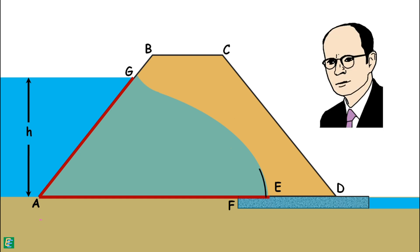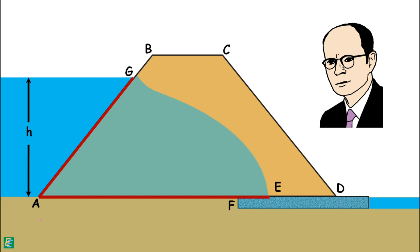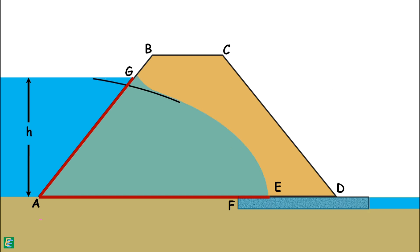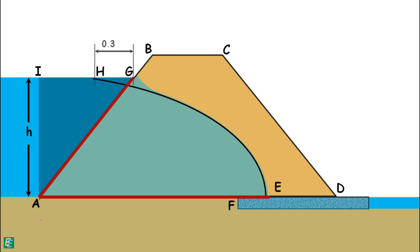The soil is saturated below the phreatic line and the pressure on this line is atmospheric. Casagrande observed that the shape of the top flow line is close to a parabola for most of its length, deviating only at the upstream and downstream faces. He recommended that the seepage line in actual dams be taken as a basic parabola, with manual corrections at these faces so it conforms to flow conditions — specifically that flow lines should be perpendicular to equipotential lines. He also recommends the seepage parabola starts from a point H on the upstream, where GH equals 0.3 times GI, and GI is the horizontal projection of the wet upstream face onto the water surface.